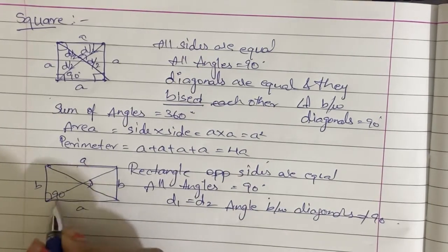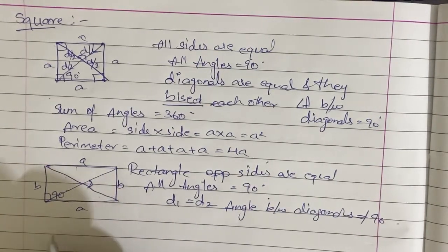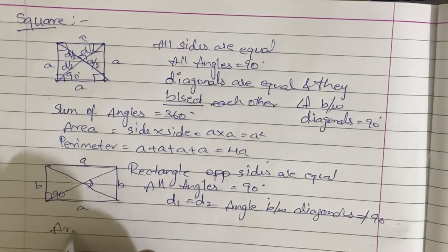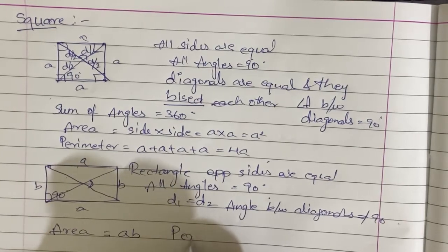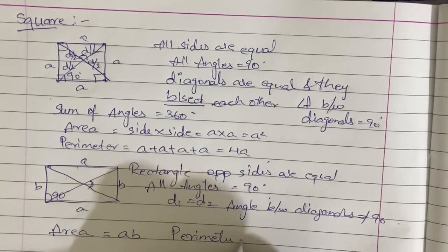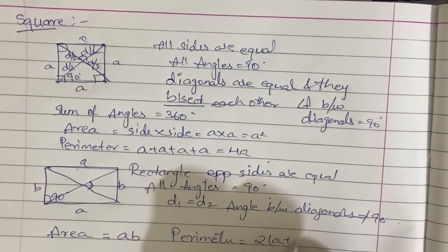The diagonals bisect each other. Area of the rectangle is A into B. Perimeter is the sum of the sides, that is equal to 2 into A plus B.